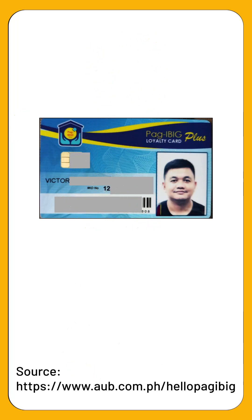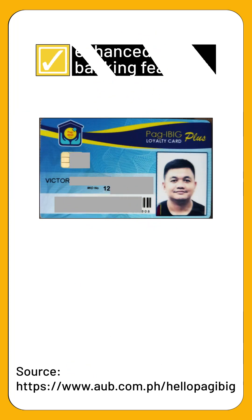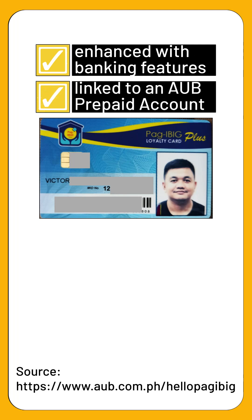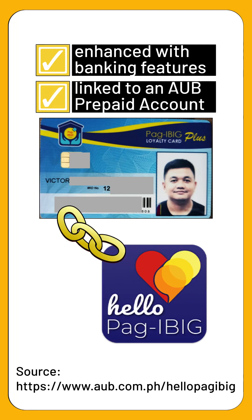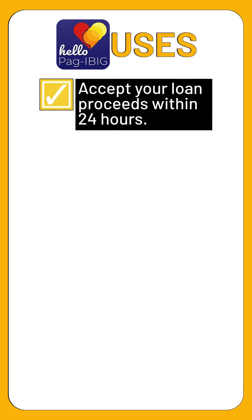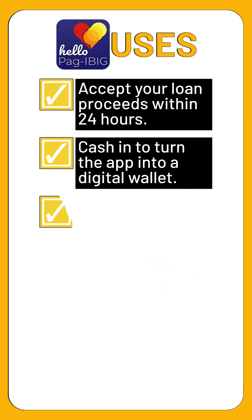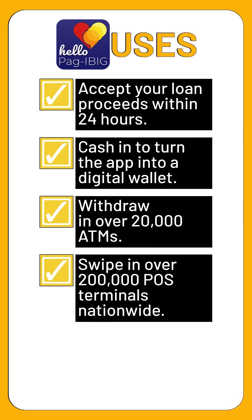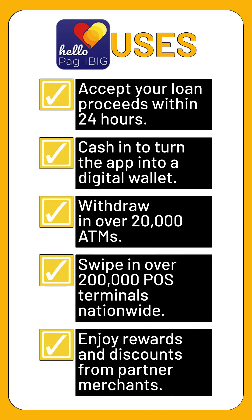According to the AUB website, the Pag-ibig Loyalty Card Plus is enhanced with banking features and is linked to an AUB prepaid account. The card and account may be used to receive loan disbursements, deposit savings, withdraw from ATMs, pay for groceries, and avail of perks and discounts from Pag-ibig partners.